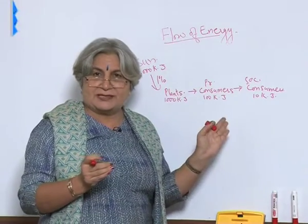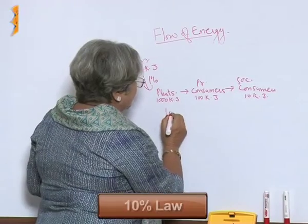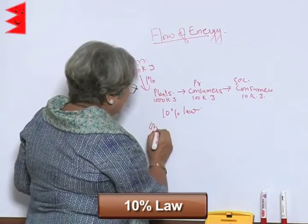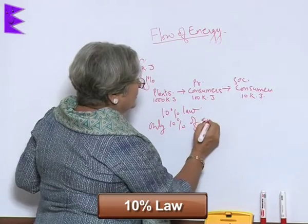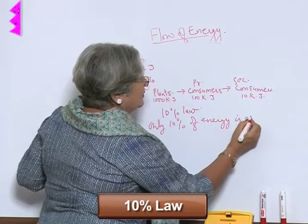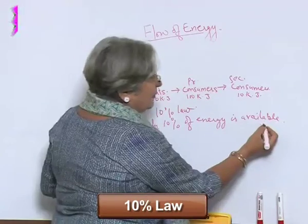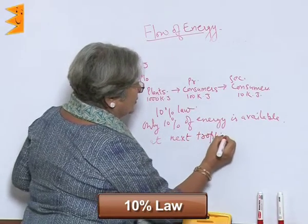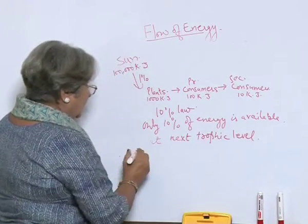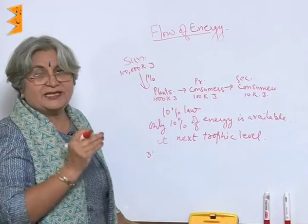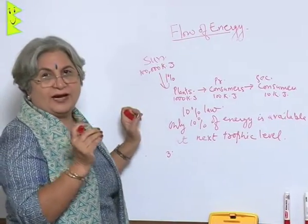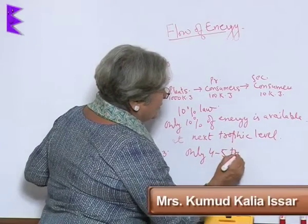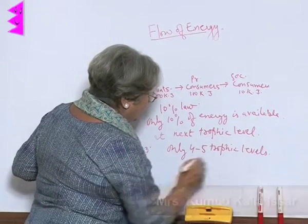On this basis, a law was concluded which is called the 10 Percent Law. According to this law, only 10% of energy is available at the next trophic level. Because energy keeps on reducing, there can be only 4 to 5 trophic levels in a food chain.